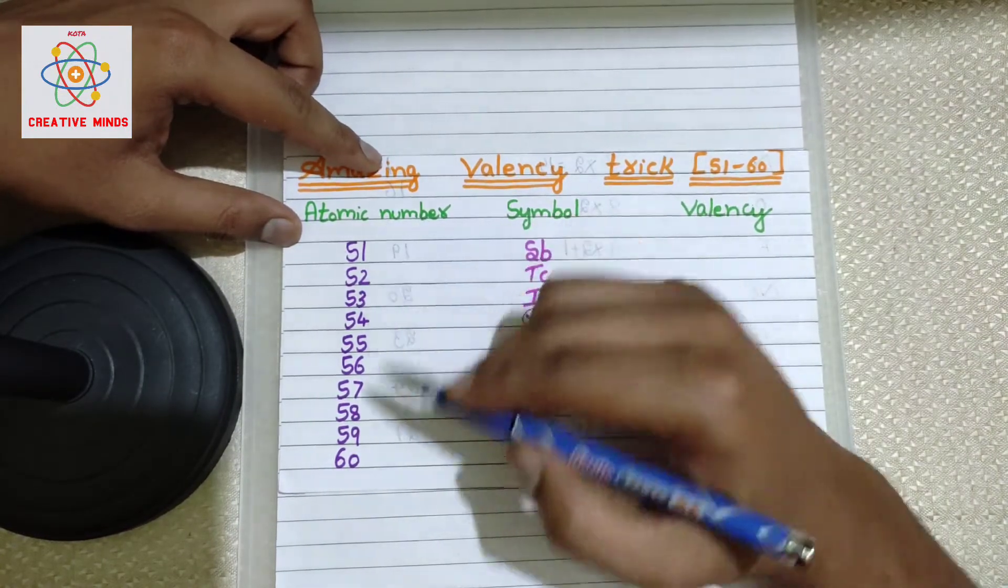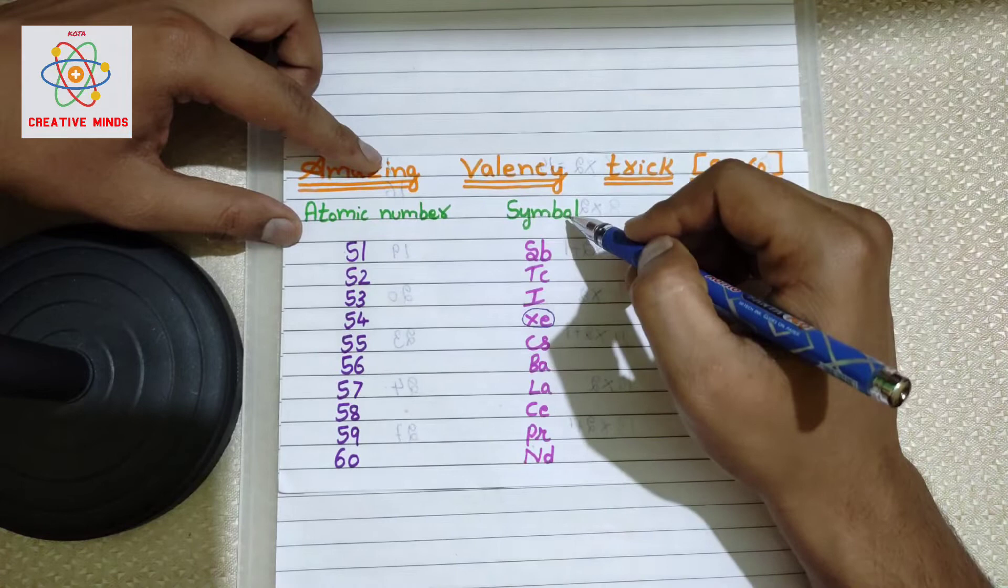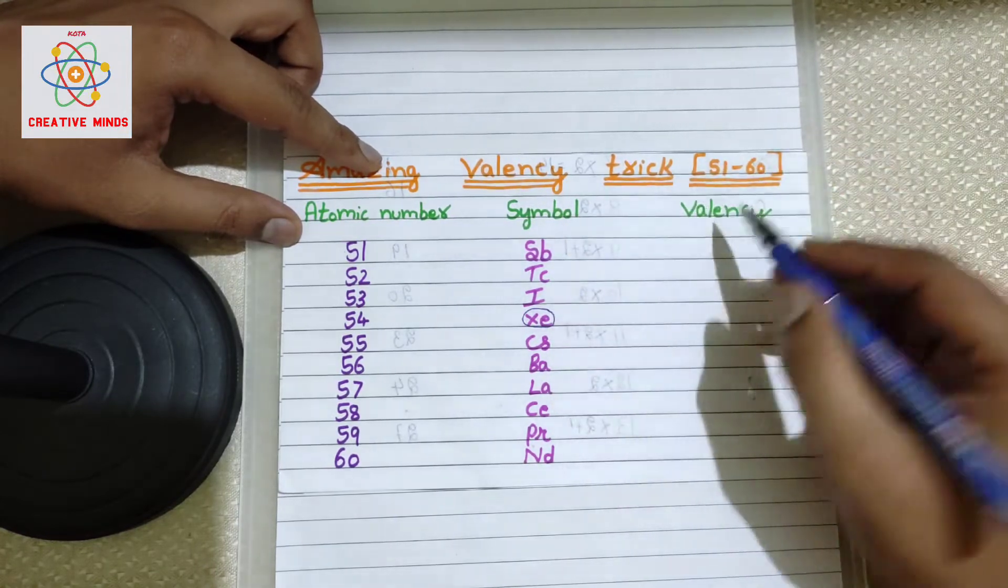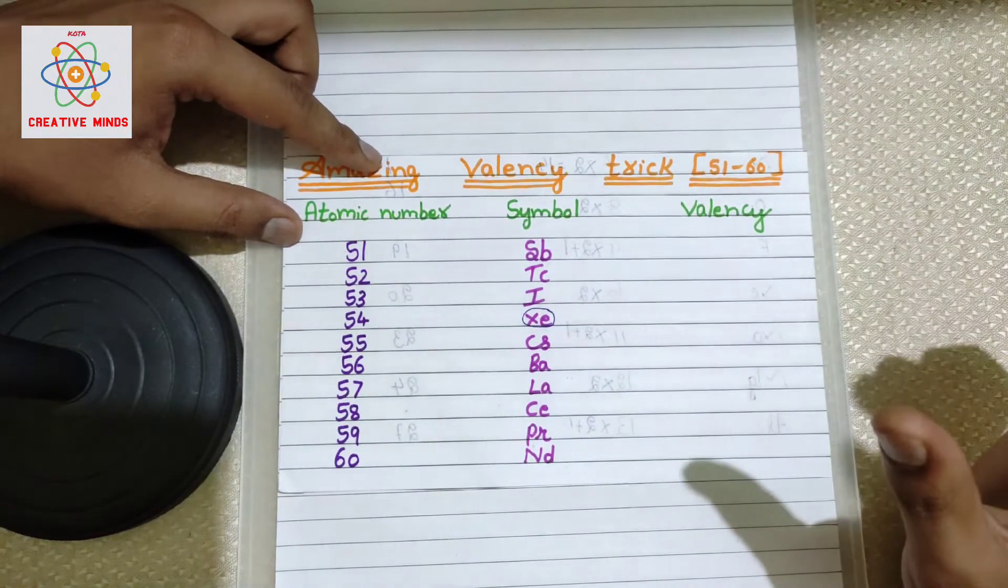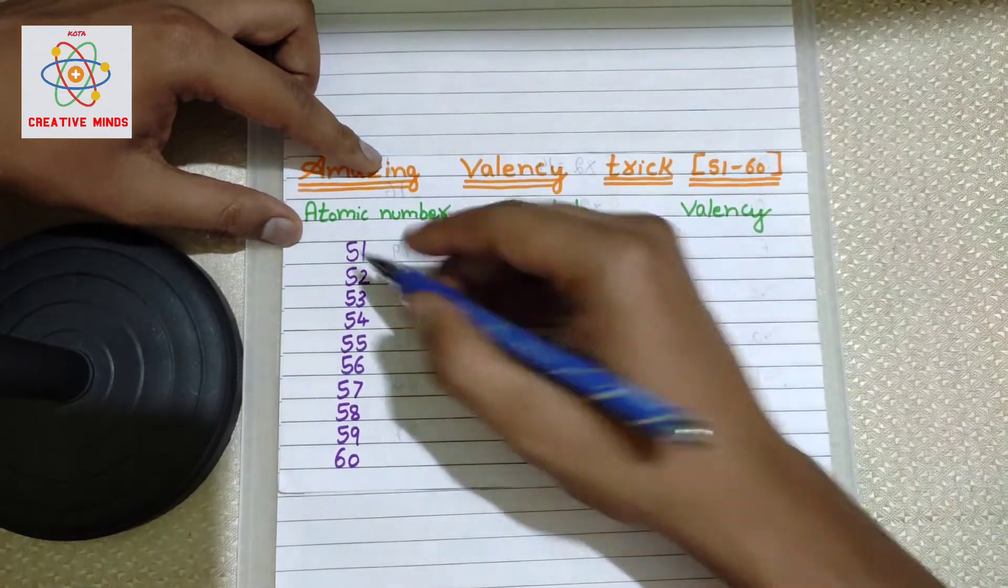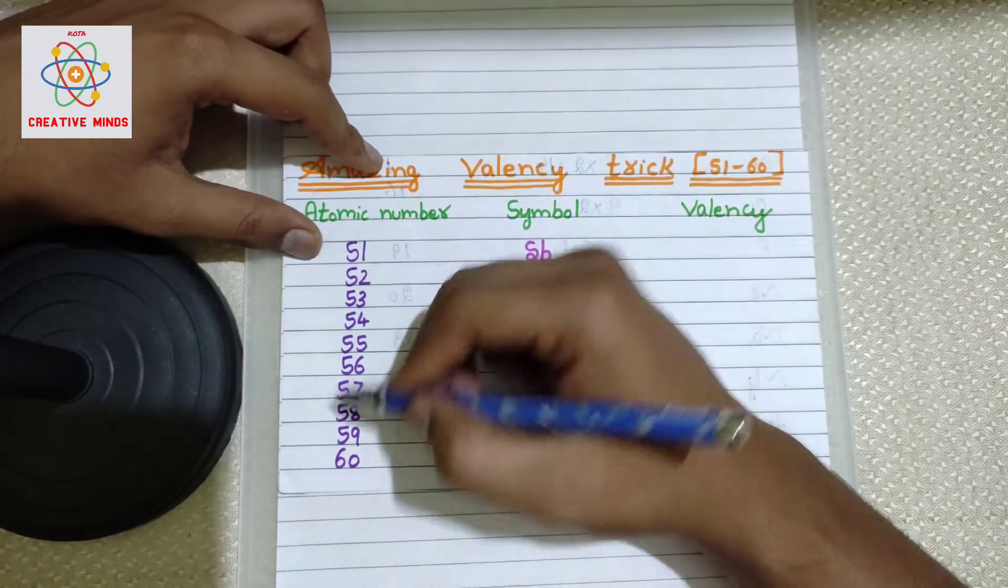Let's start the video now. As you can see here, I have taken the atomic numbers from 51 to 60. Next, I have written the symbols of the respective elements. Then at last, we will be writing the valences by using some cool shortcut tricks.